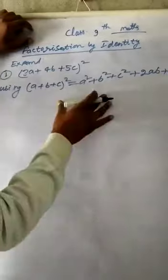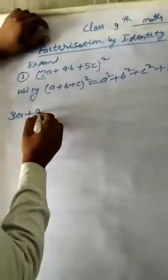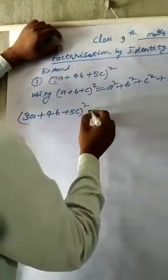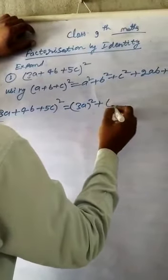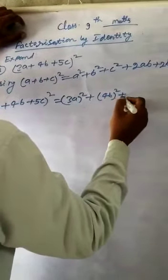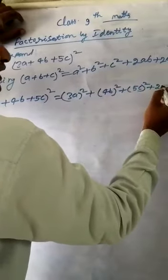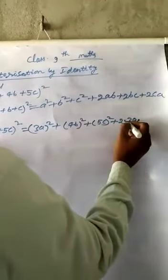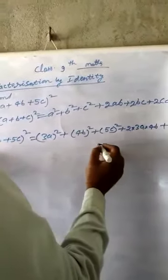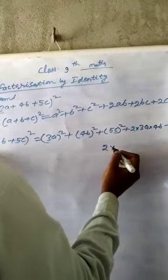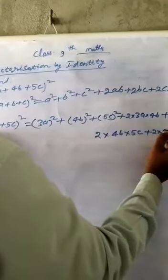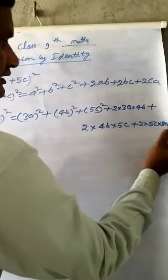So using this identity, we get 3A plus 4B plus 5C whole square. This is A, this is B, this is C. Equal to 3A square plus 4B square plus 5C square plus 2 into 3A into 4B plus 2 into 4B into 5C plus 2 into 5C into 3A.